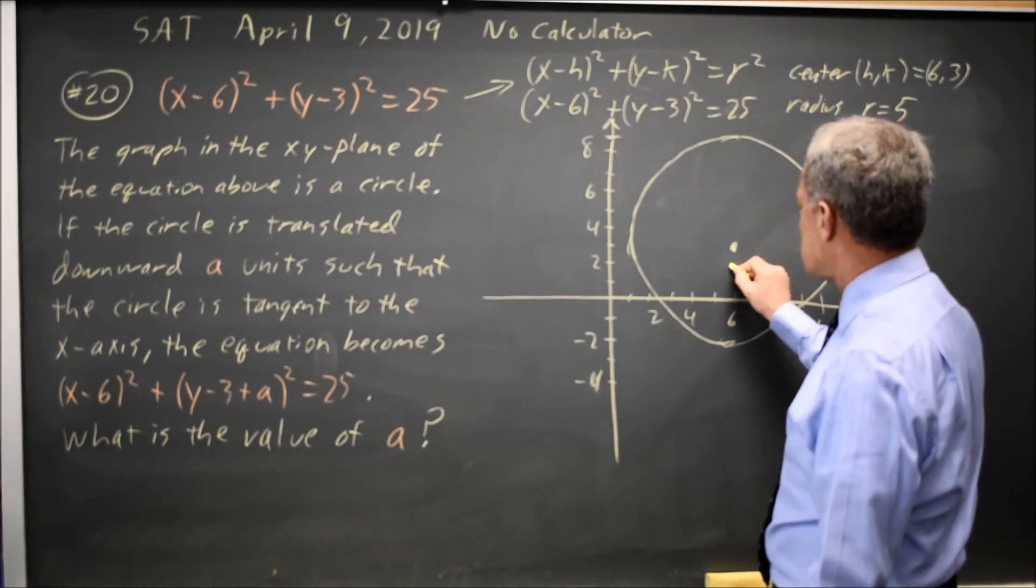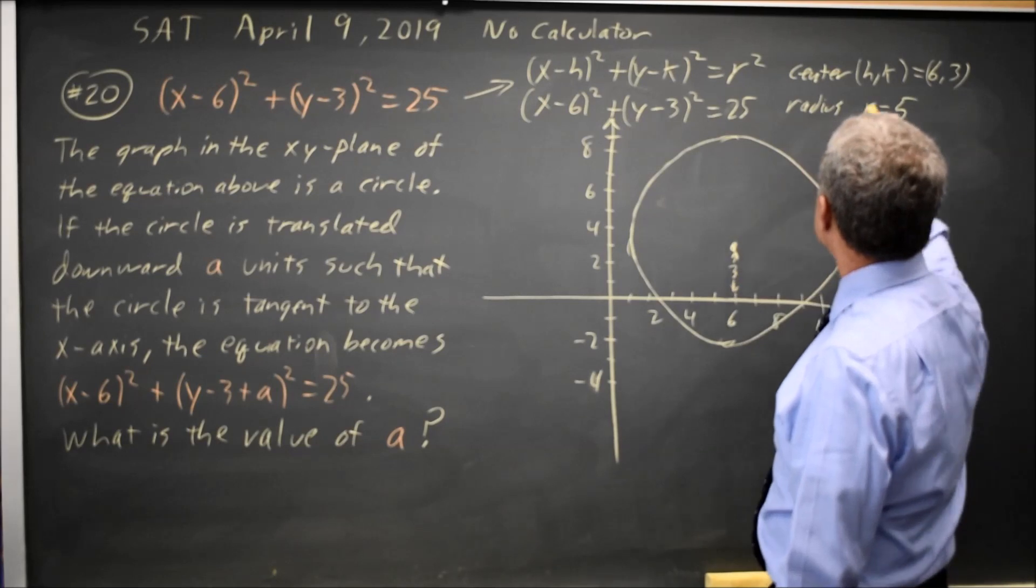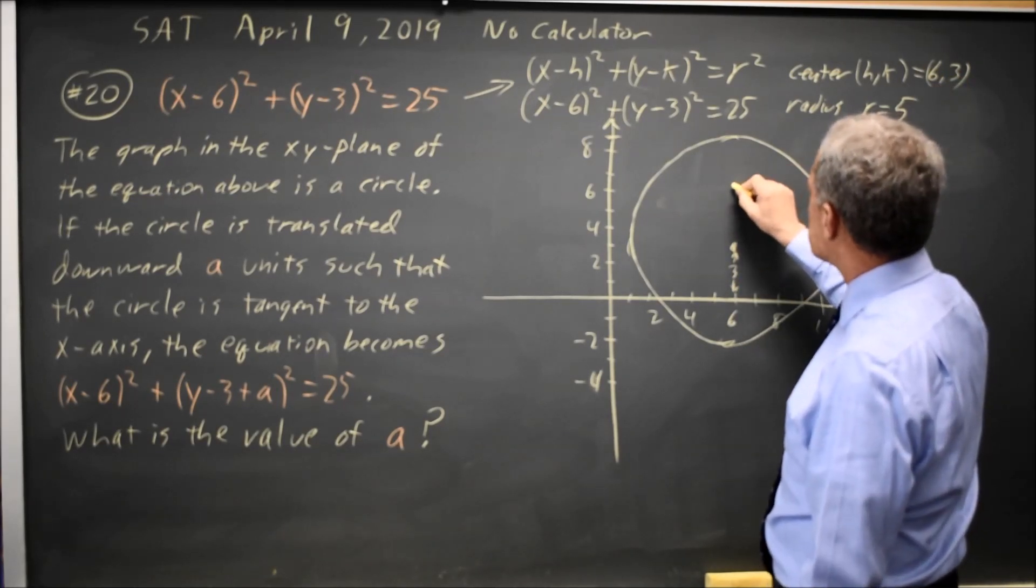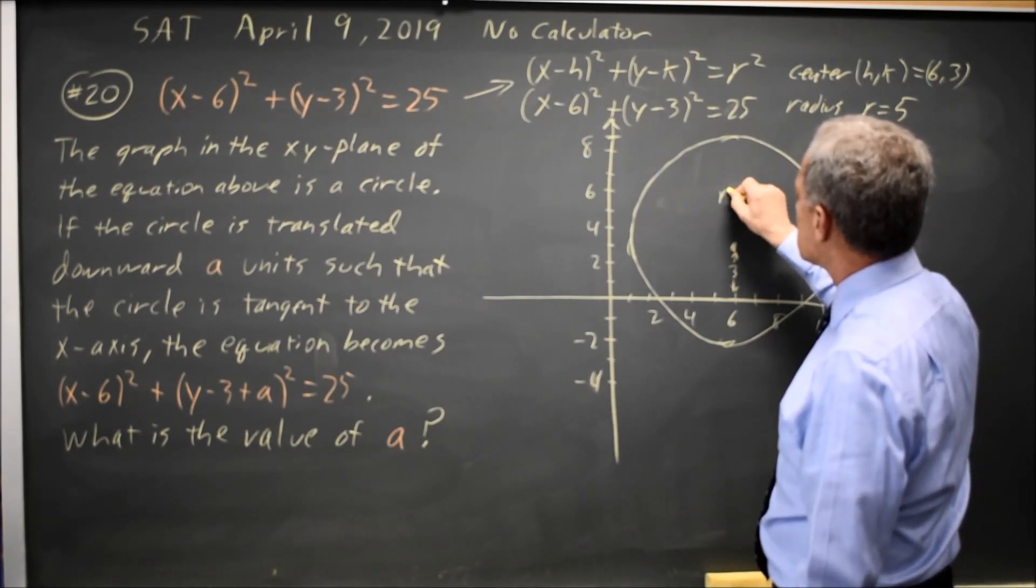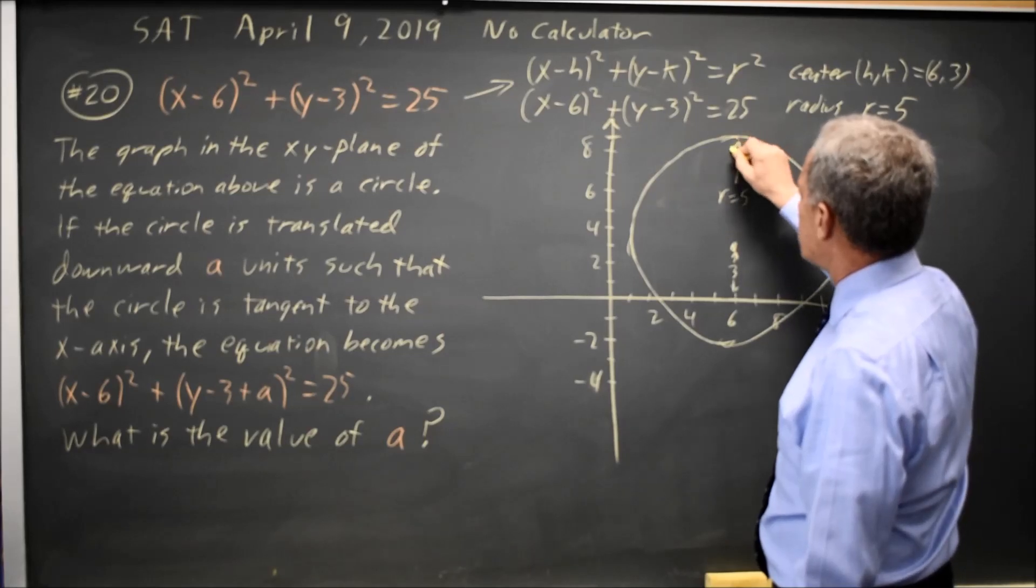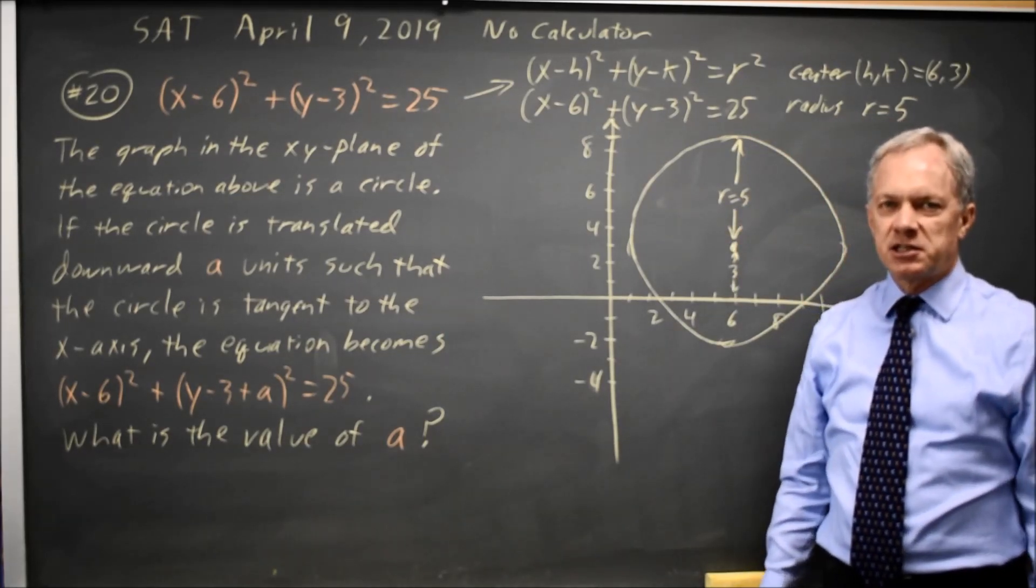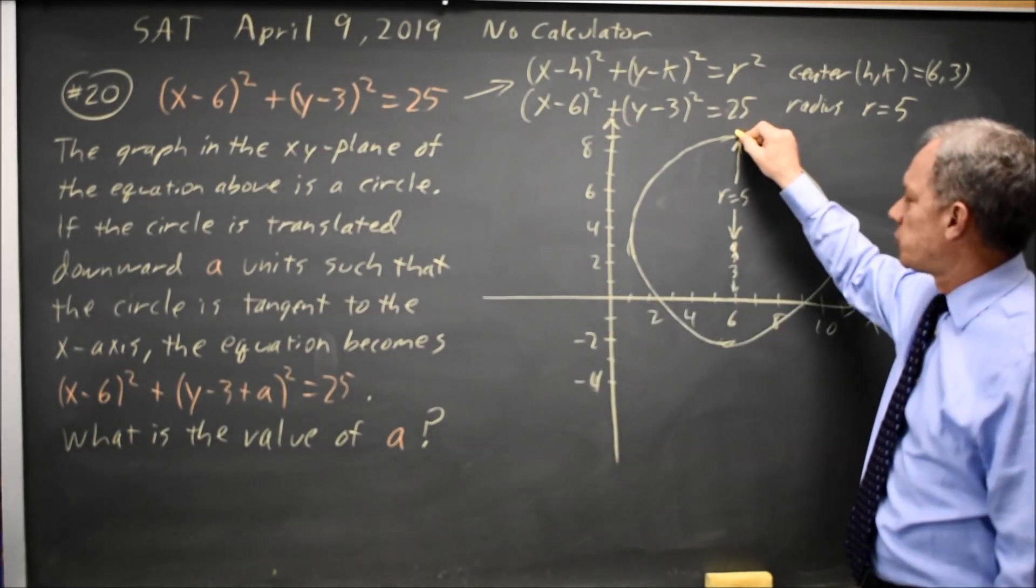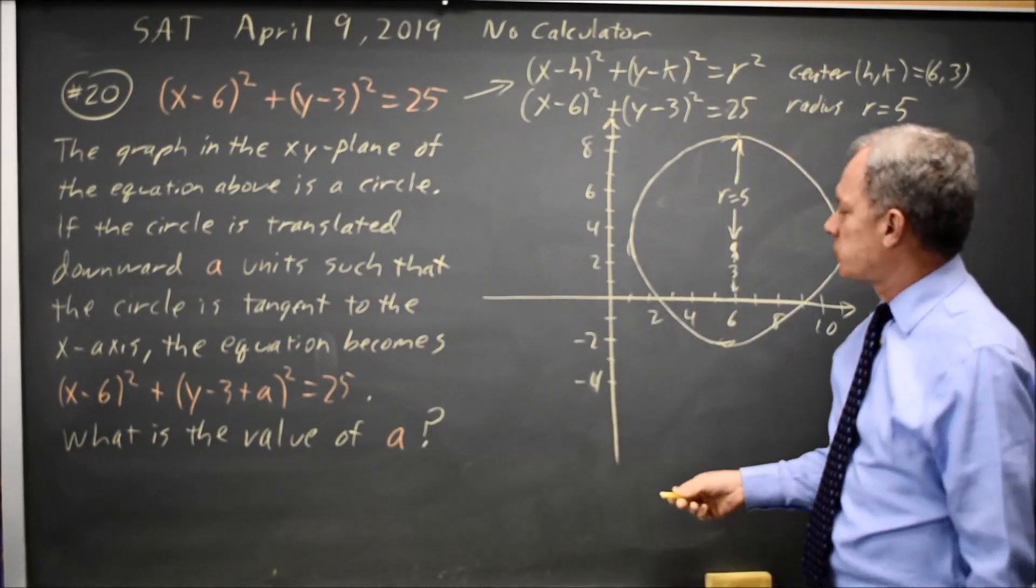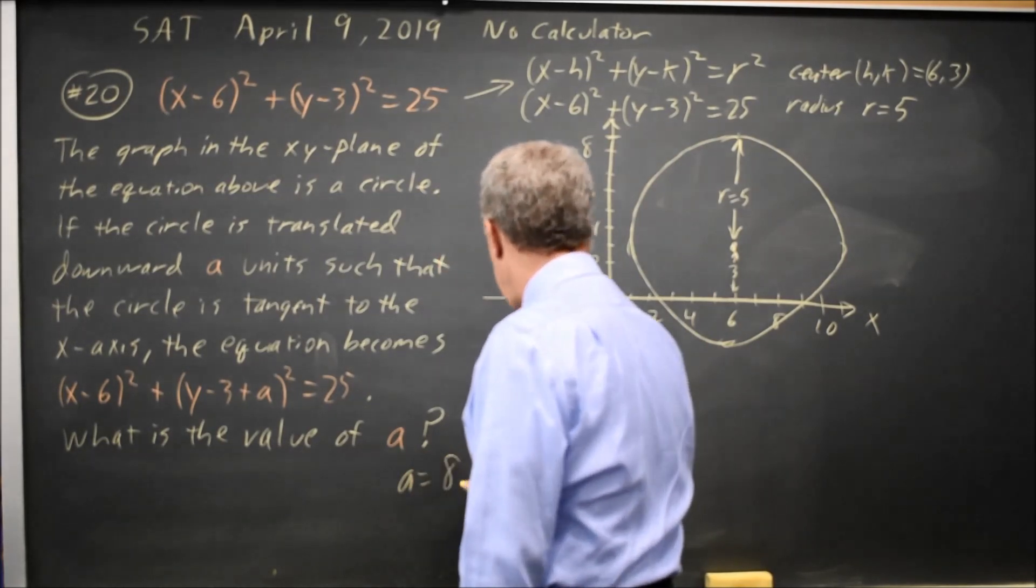This distance is 3 because it's the y-coordinate at the center. And this distance is the radius 5. To translate down so that the circle is tangent, I have to translate down so that this point is tangent. So my translation a equals 8.